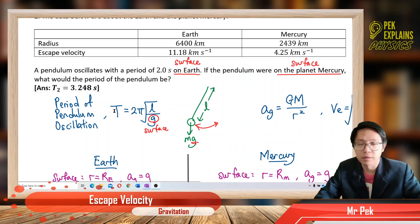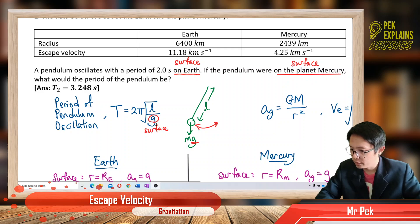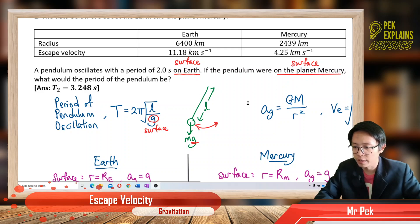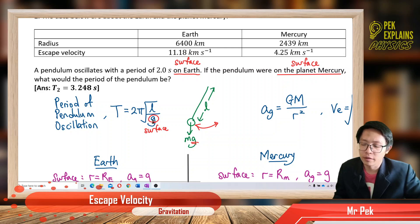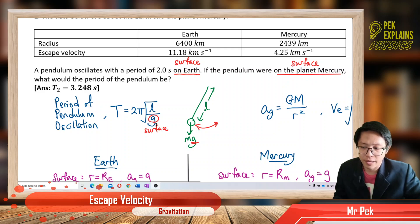So the period should be different for both cases. For both cases, the length of the pendulum should be the same — it doesn't talk about changes in length. The only difference is the gravity, because different planet means different gravity. So we need to investigate the value of gravity before we can find the period.